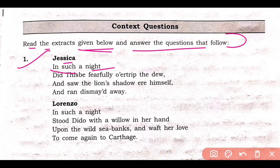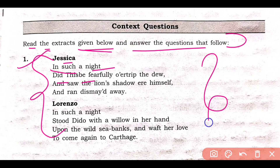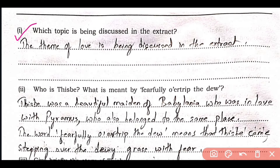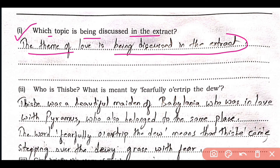The first extract is about Jessica. Lorenzo and Jessica are sitting in the garden of Portia — in front of the garden of Portia's house. Portia is not there. They are sitting in the moonlight, taking care of Portia's house. The extract discusses the theme of love. They are discussing mythological figures like Thisbe, Dido, and Pyramus. You can read the extract on the basis of the questions.